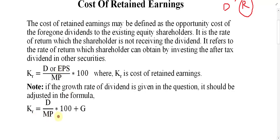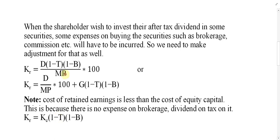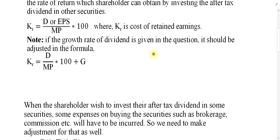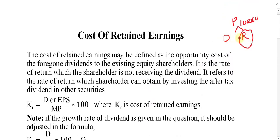Take note: when the shareholder wishes to invest their after-tax dividend in some securities, expenses on buying those securities — such as brokerage commission — will have to be incurred, so we need to make an adjustment for that as well. If the company pays the whole dividend to the shareholder, they must first pay tax to the government and then pay brokerage fees when they invest that money somewhere.